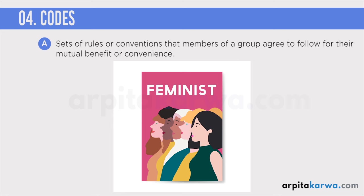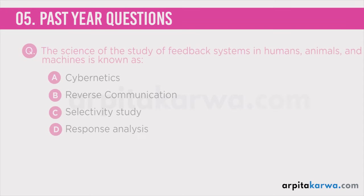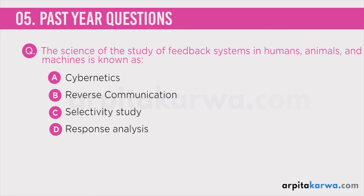Now that we have completed our discussion, let us look at questions from past year papers. The first one: 'The science of the study of feedback systems in humans, animals, and machines is known as...' The correct answer is A — cybernetics — because you can clearly see that the question is essentially the definition of cybernetics. If asked to define cybernetics, you would say it is the science of the study of feedback systems in humans, animals, and machines.